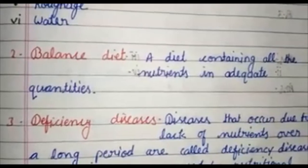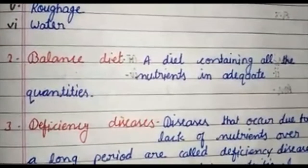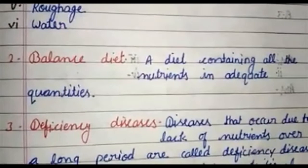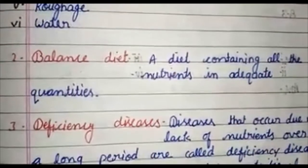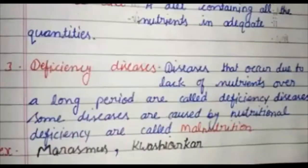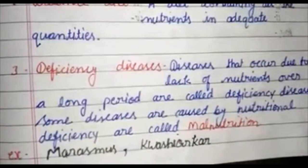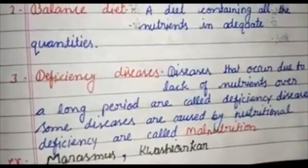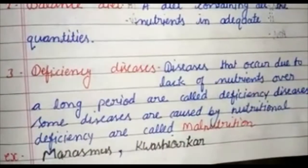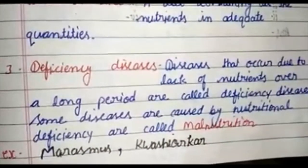Second topic: balanced diet. A diet containing all the nutrients in adequate quantities is called a balanced diet. Third topic: deficiency diseases. Diseases that occur due to lack of nutrients over a long period are called deficiency diseases.